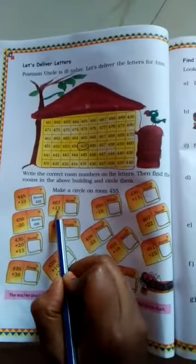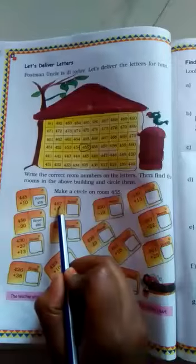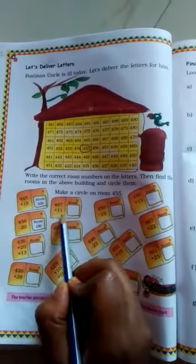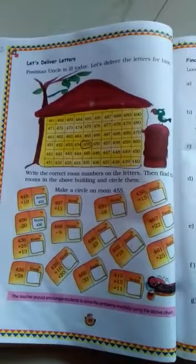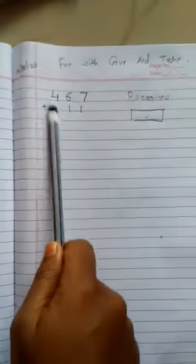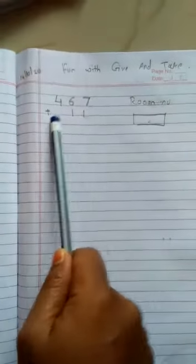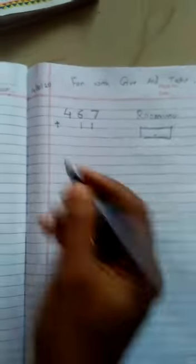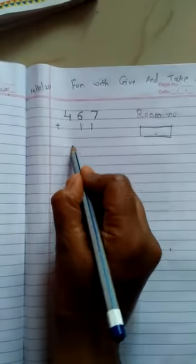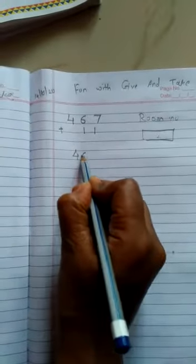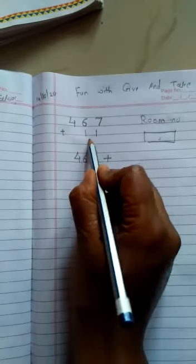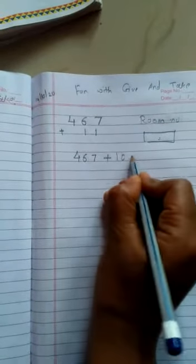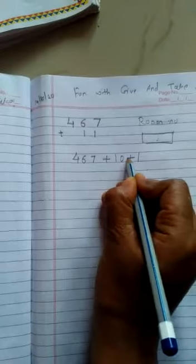Let's see the second example, 467 plus 11. Let's solve this example. Look at here. 467 plus 11. So we will do easy way, 467 plus 10 plus 1. 10 plus 1.